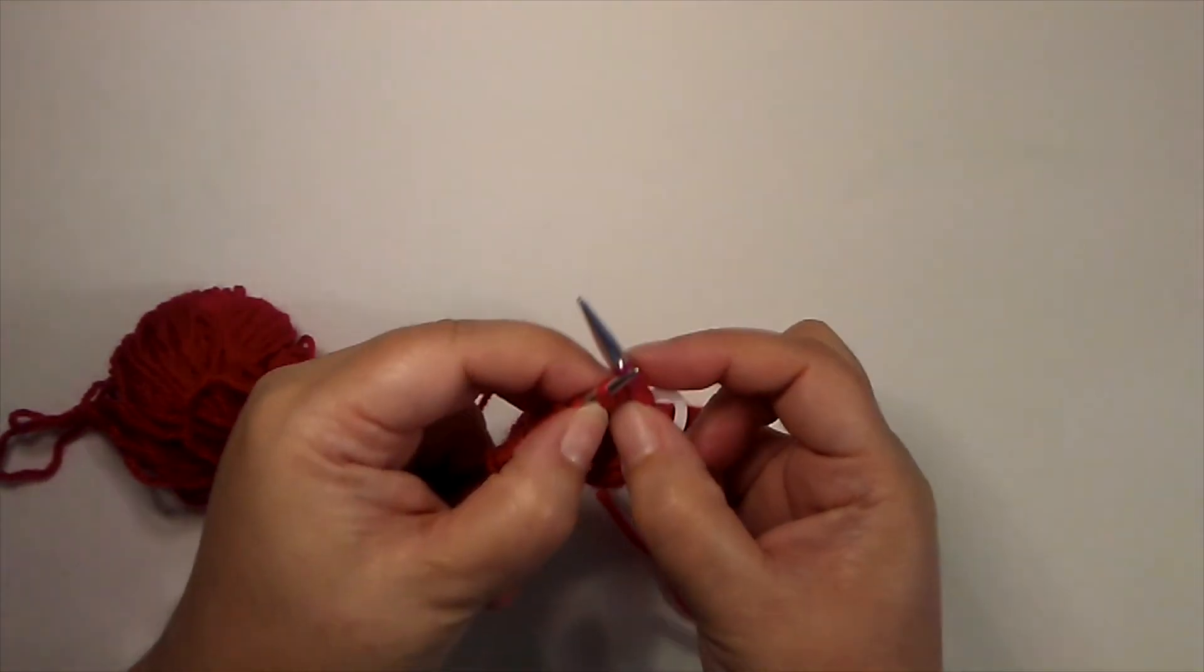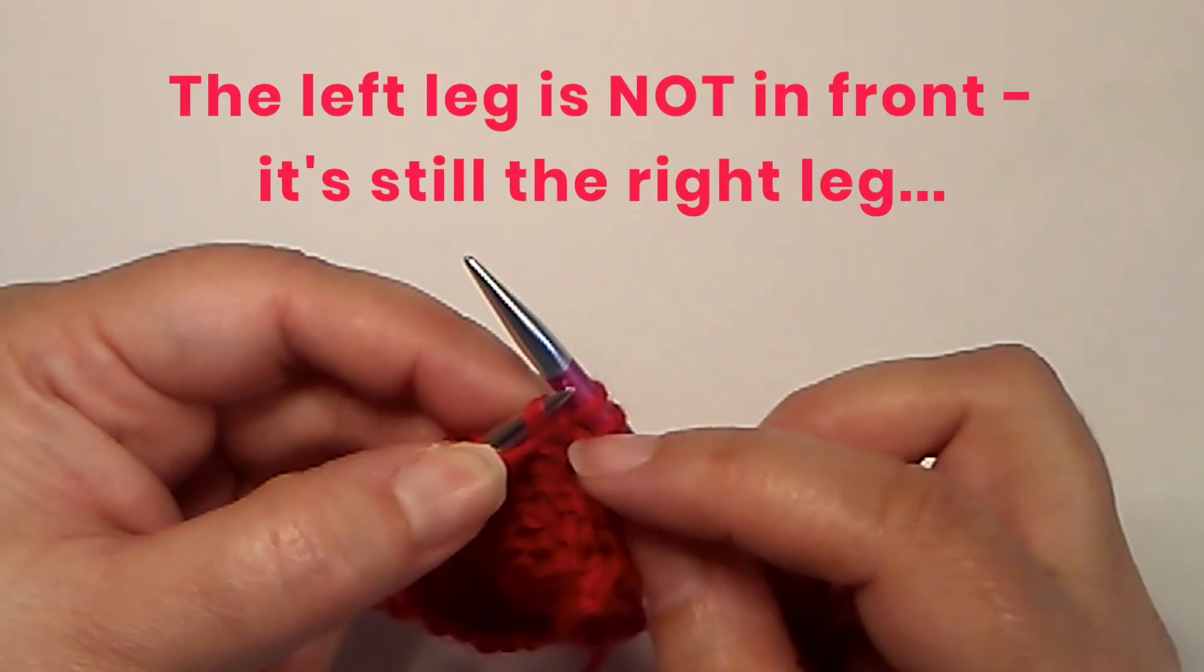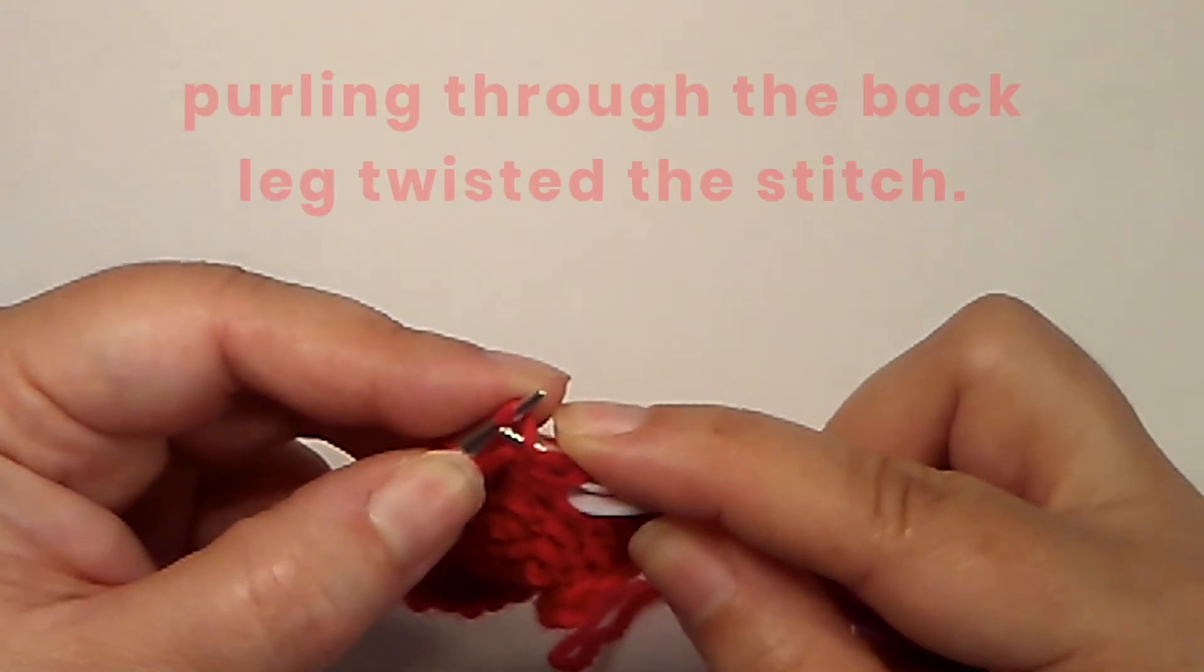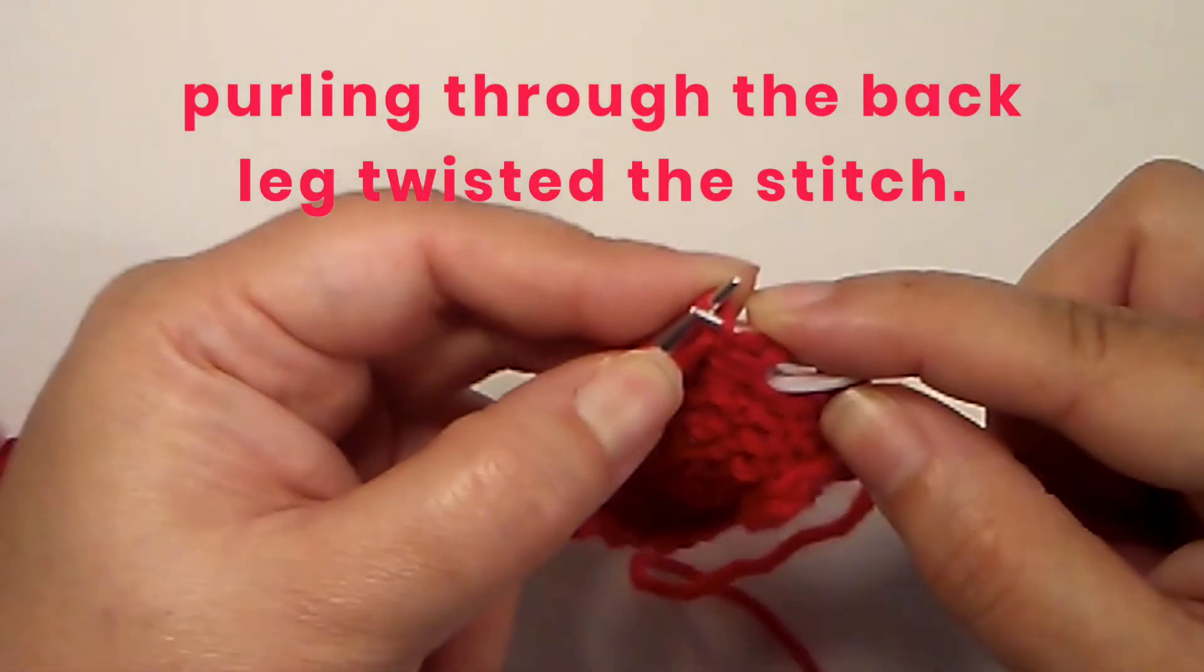Now when we look at our stitch, it looks like the left leg's in front and the right leg's in back. If I purl through this right leg again, what I'll get is like a big yarn over on the other side and I don't want that.